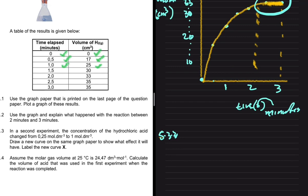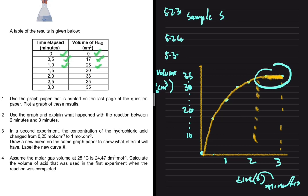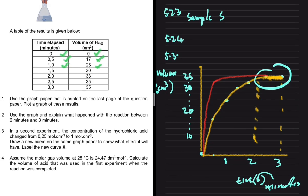For 5.3.3, in a second experiment the concentration of hydrochloric acid is changed from 0.25 to 1 mole per decimetre cube. We need to draw a new curve on the same graph. Increasing the concentration increases the rate of reaction, so the new graph should have a steeper gradient and reach completion before the initial graph. If your new graph is below the initial graph, that is wrong — that would imply the rate decreased, which is not the case.